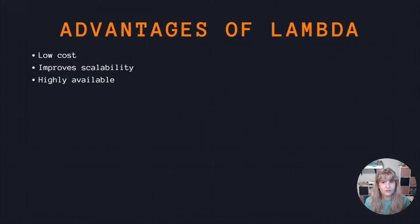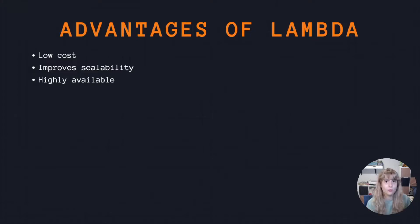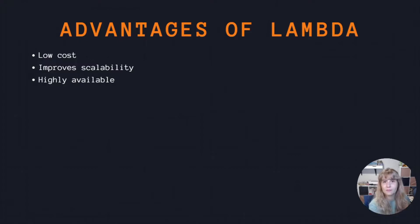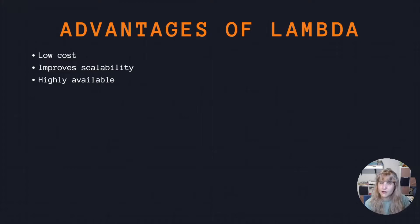There are a lot of advantages to using AWS Lambda. First, it is low cost — you only pay for the compute time you use. If you have low traffic, you're not going to pay much. If you have higher traffic, you pay more, but you're paying for what is actually being used, not for idle time. So if your peak traffic is from 10am to 12pm, you pay for that window, and the rest of the time when traffic is low, you're not paying anything.